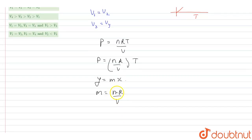Here, number of moles is constant and R is also constant. Therefore, I can say that m will be inversely proportional to the volume.